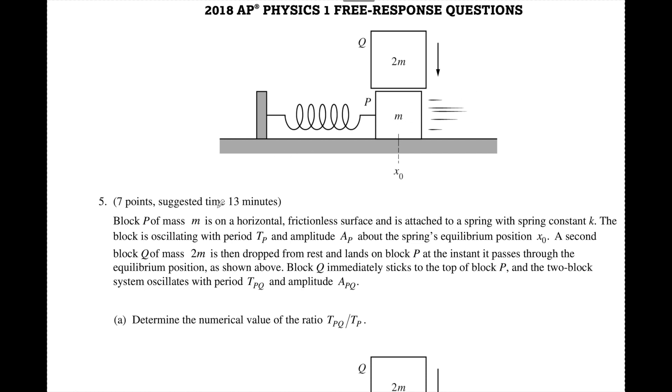This question right here is a seven point question, suggested time is about 13 minutes. It deals with an oscillating block that's going to be moving back and forth, and then at the instant it's at its equilibrium position where the spring is not stretched or compressed we drop 2m on top of it. Then the period of that spring is going to change from the period T sub p to the period T sub pq and in the first question they want us to determine a numerical value of this ratio.